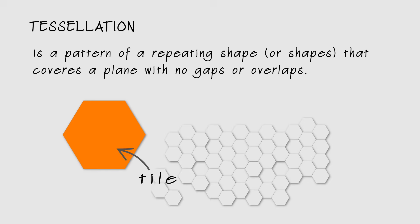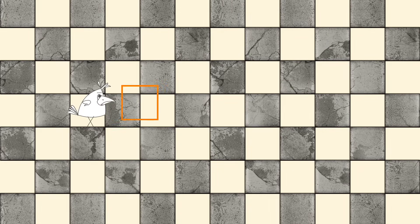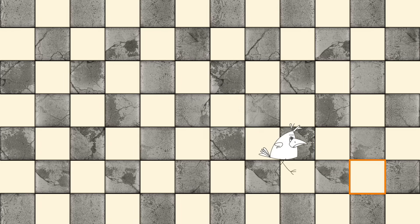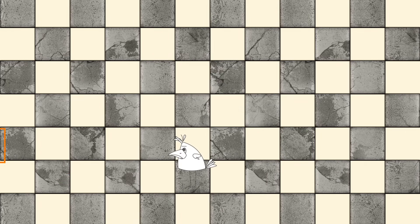The repeating shape is called a tile. A simple checkerboard pattern is a tessellation made of squares. The squares meet edge to edge with no gaps and no overlapping areas.